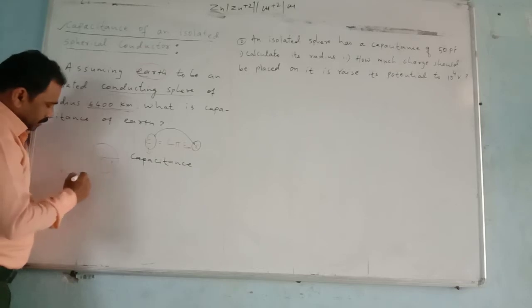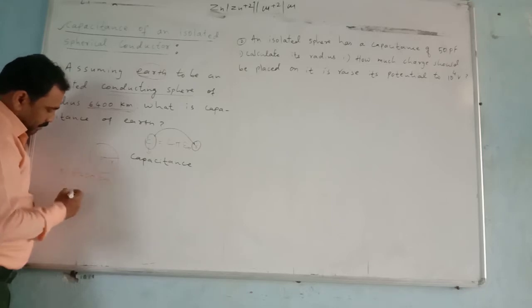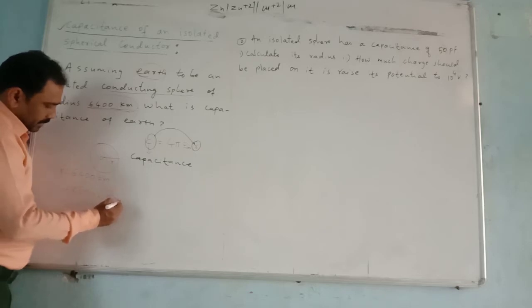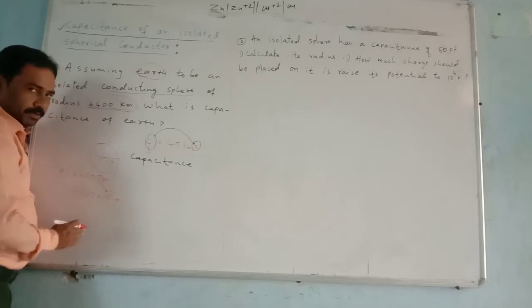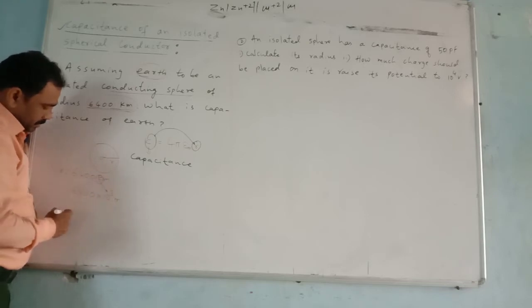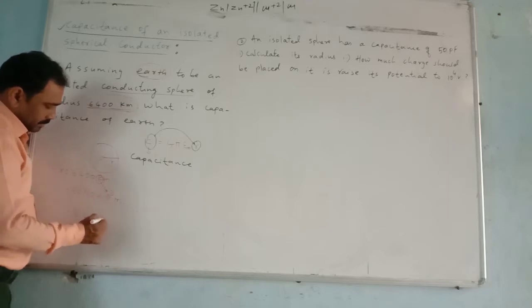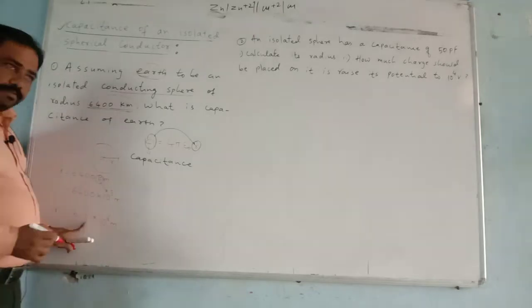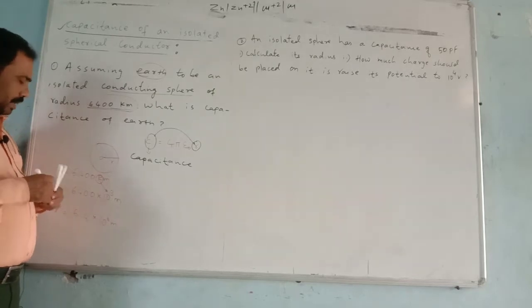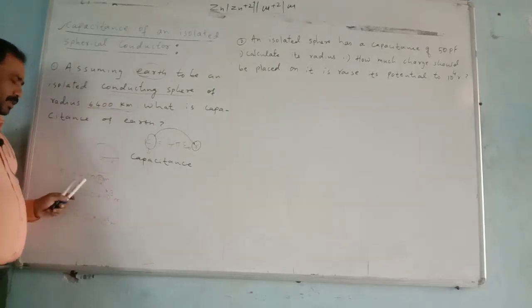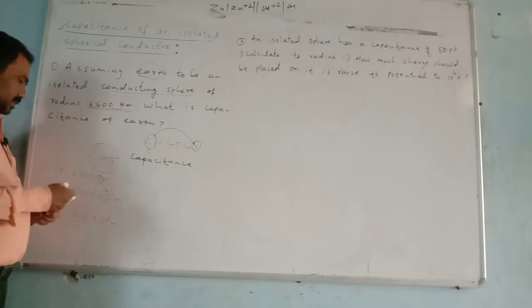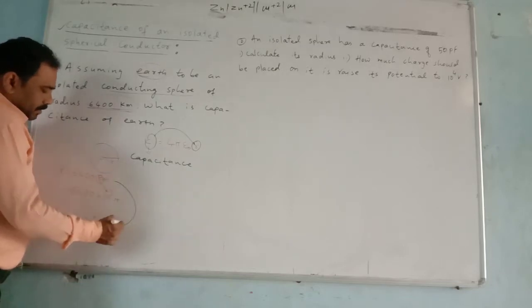The value of r is given as 6400 kilometers. Kilo means 10 to the power 3, so that is 6400 into 10³ meter. If we place the decimal point, it becomes 6.4 into 10⁶ meter. So the radius of Earth is 6.4 × 10⁶ meters, which is the conversion from kilometers to meters.